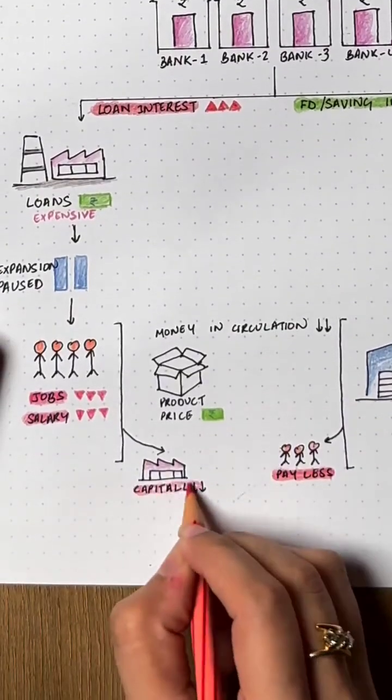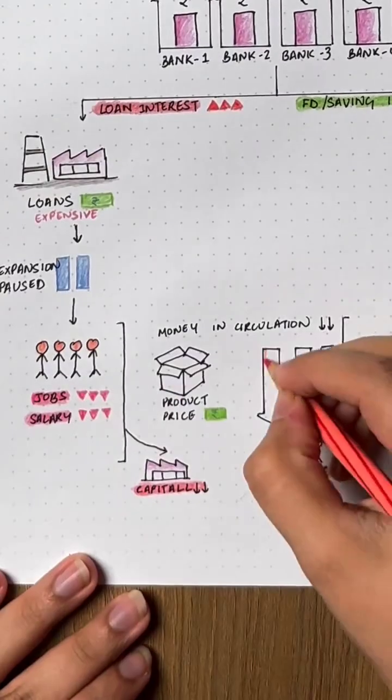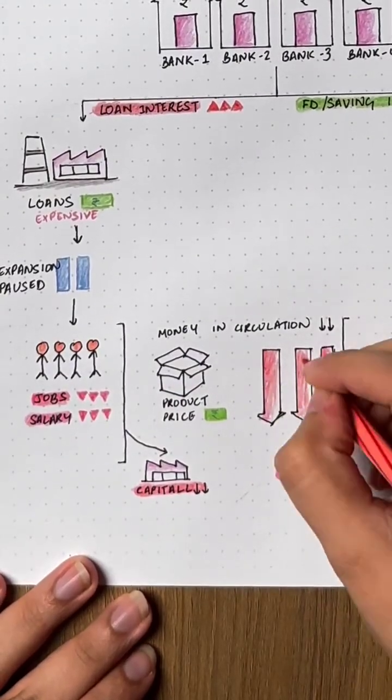So, eventually, product prices will start taking a hit. When prices of all products in the economy start to decrease, that's when inflation starts decreasing.